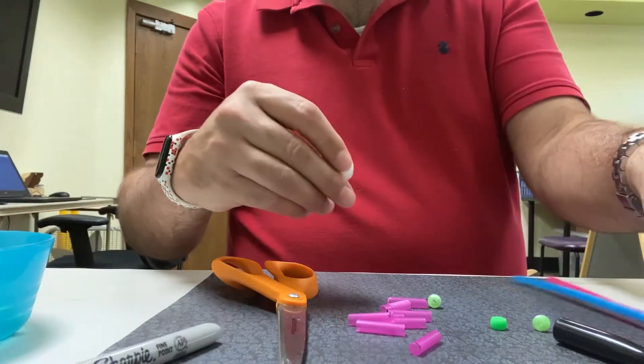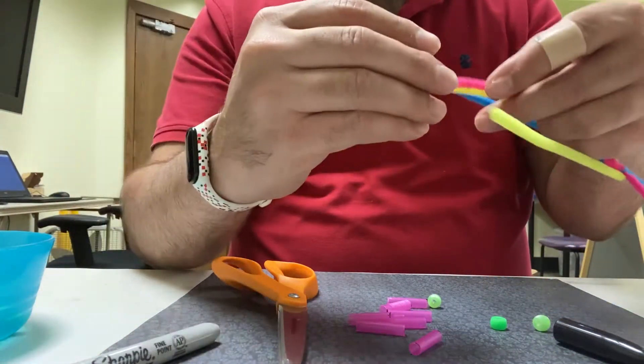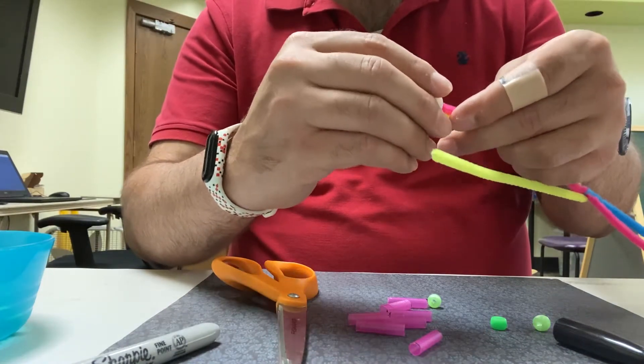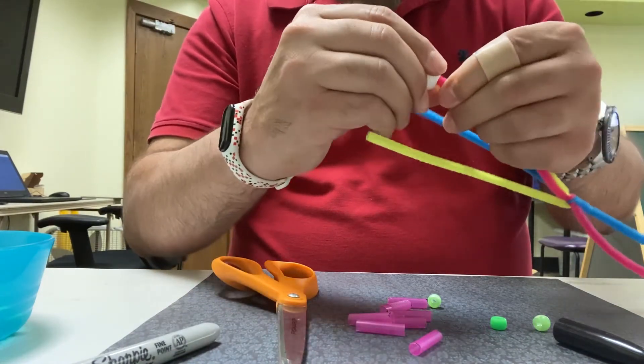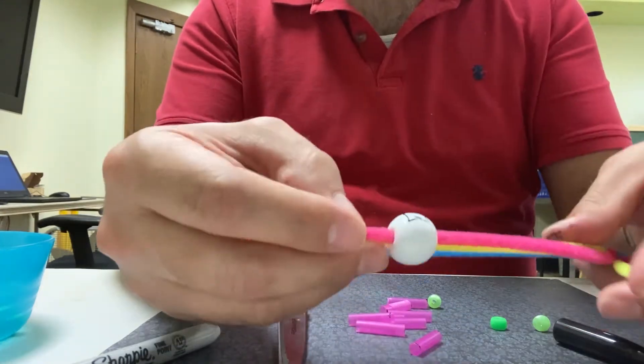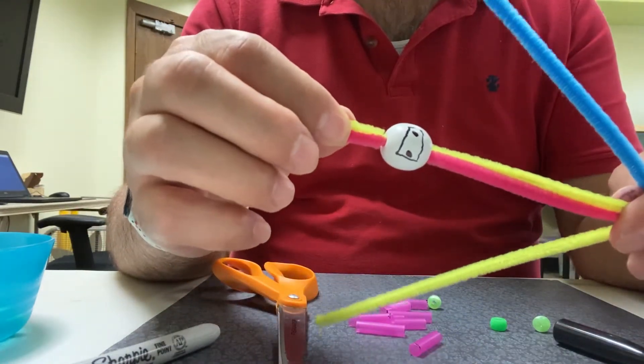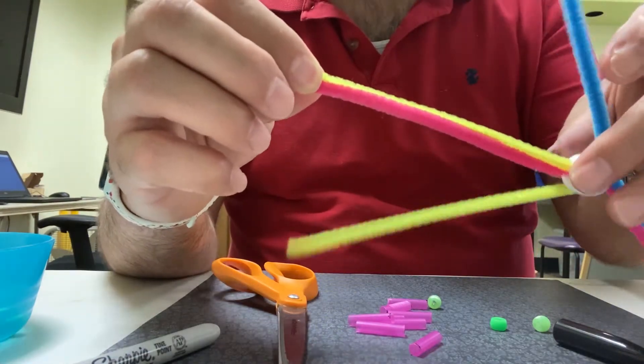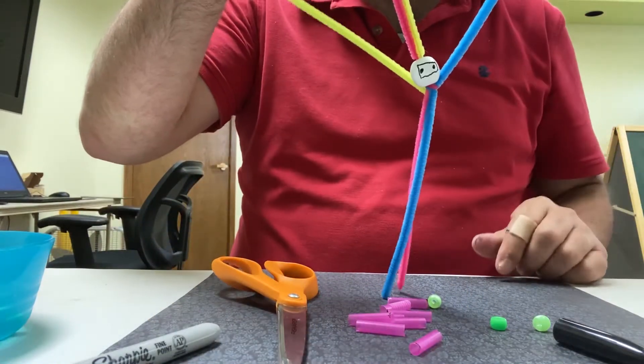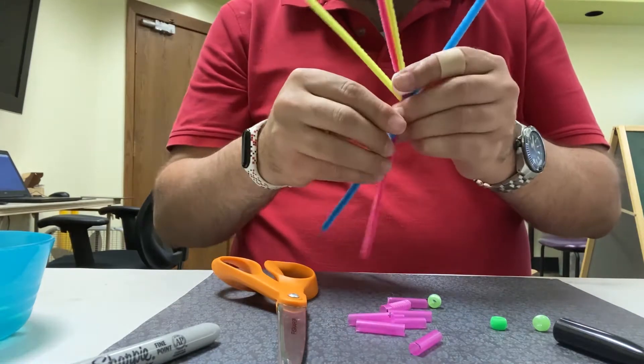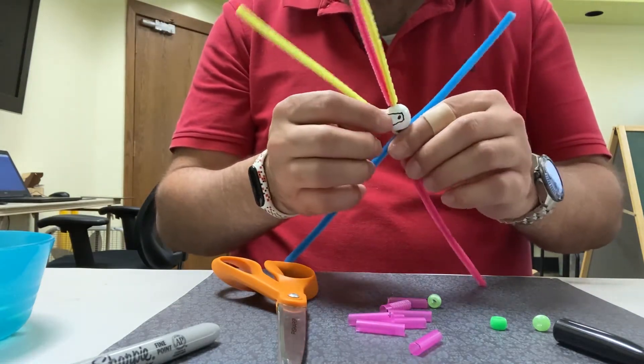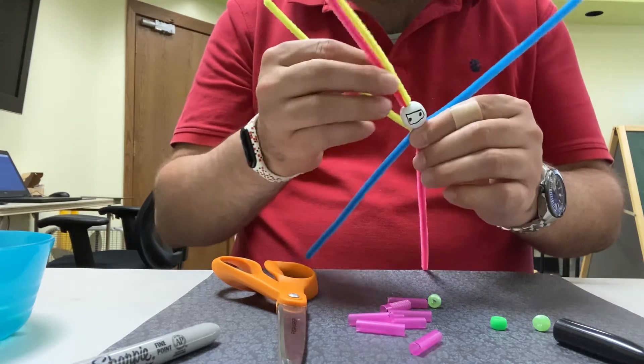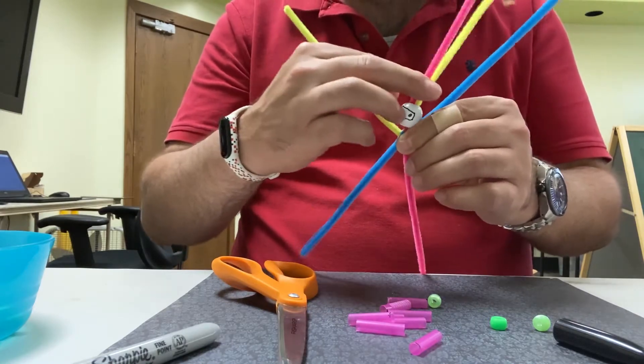Now we're going to take the bead and we are going to thread two of the pipe cleaners through it. All right and as you can see already it looks like a very funky ninja with two legs, two arms, and then a very extended ponytail up here.